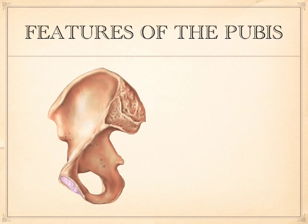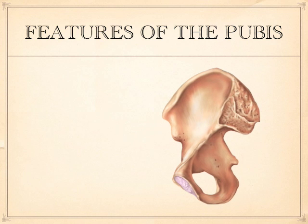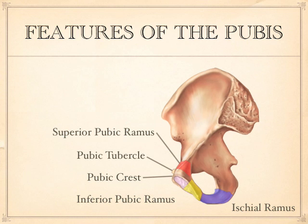Let's turn this around one more time. On the pubis, right here we have the superior pubic ramus. Here's the inferior pubic ramus. Here's the ischial ramus — that's the purple one. The pubic tubercle is sticking out right here. And the small edge between the tubercle and the joint surface is the pubic crest.